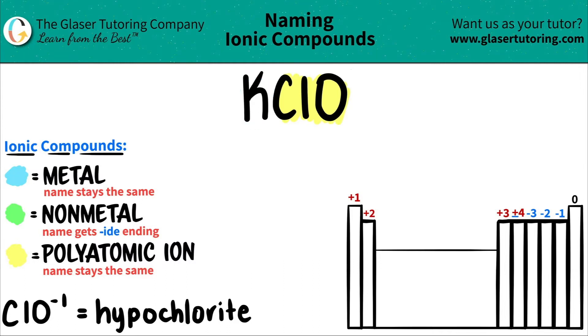If I go to the periodic table, potassium is right here — it's in group one. All of group one are metals except for hydrogen. So K is a metal.